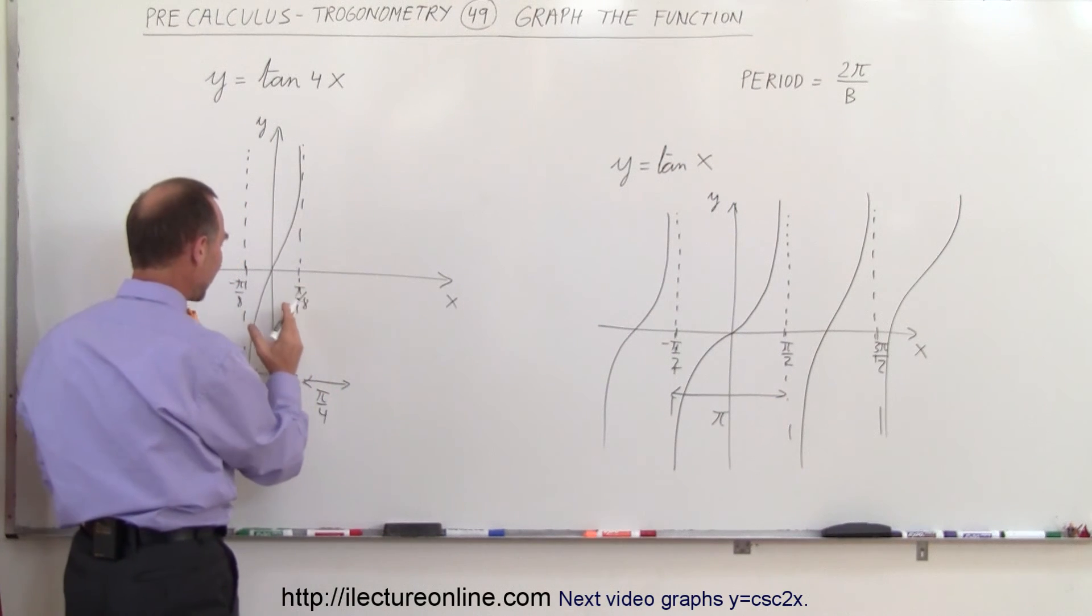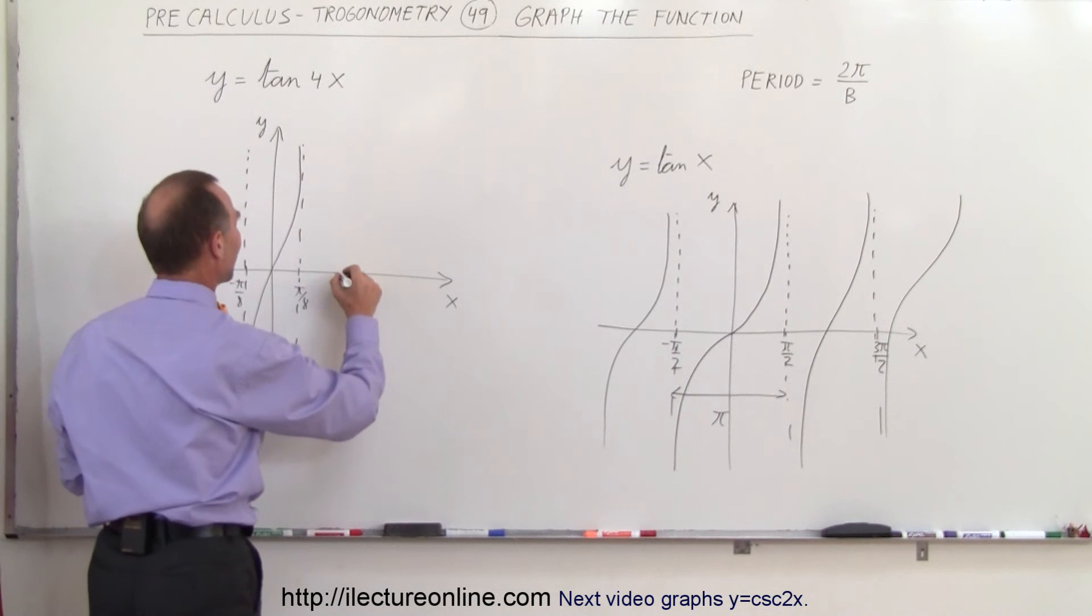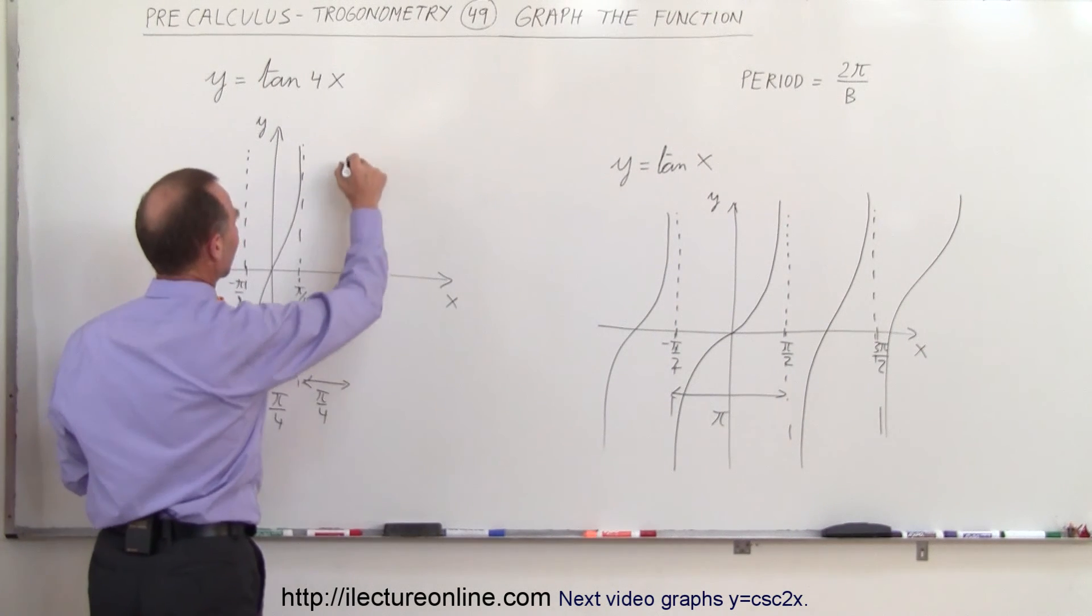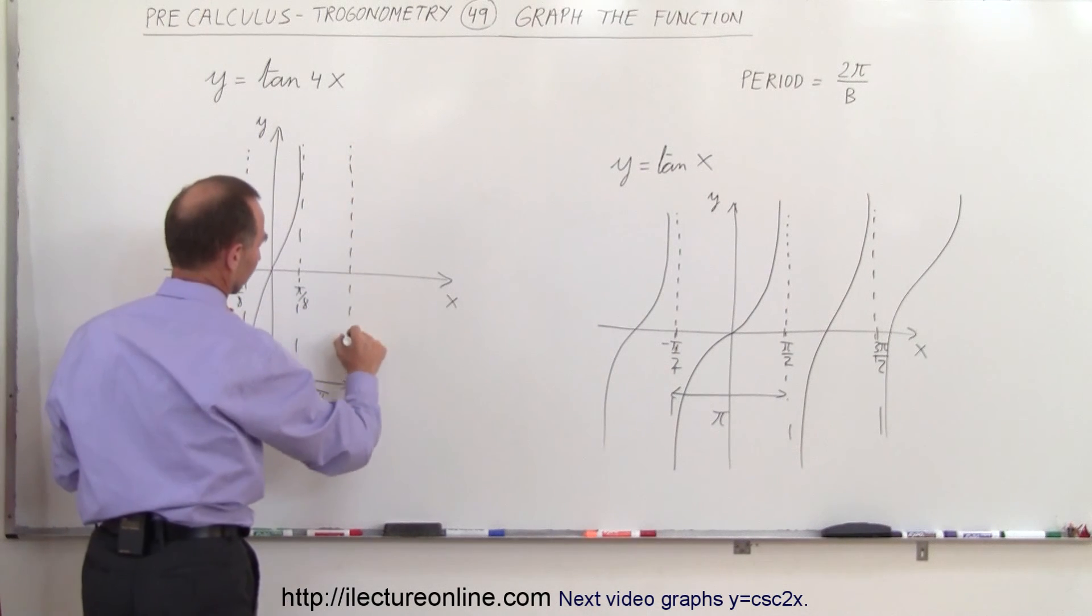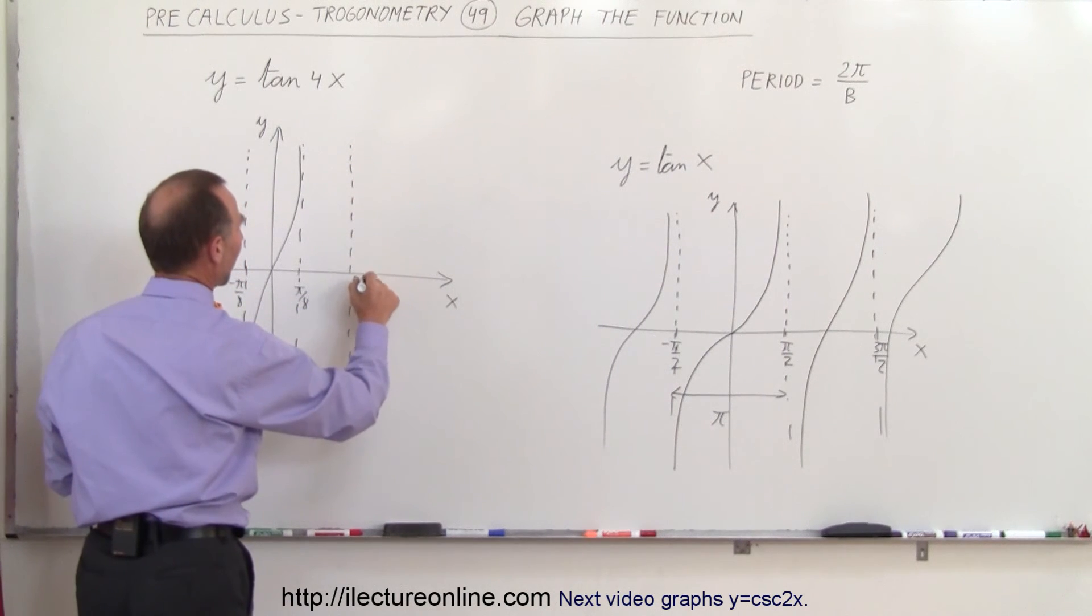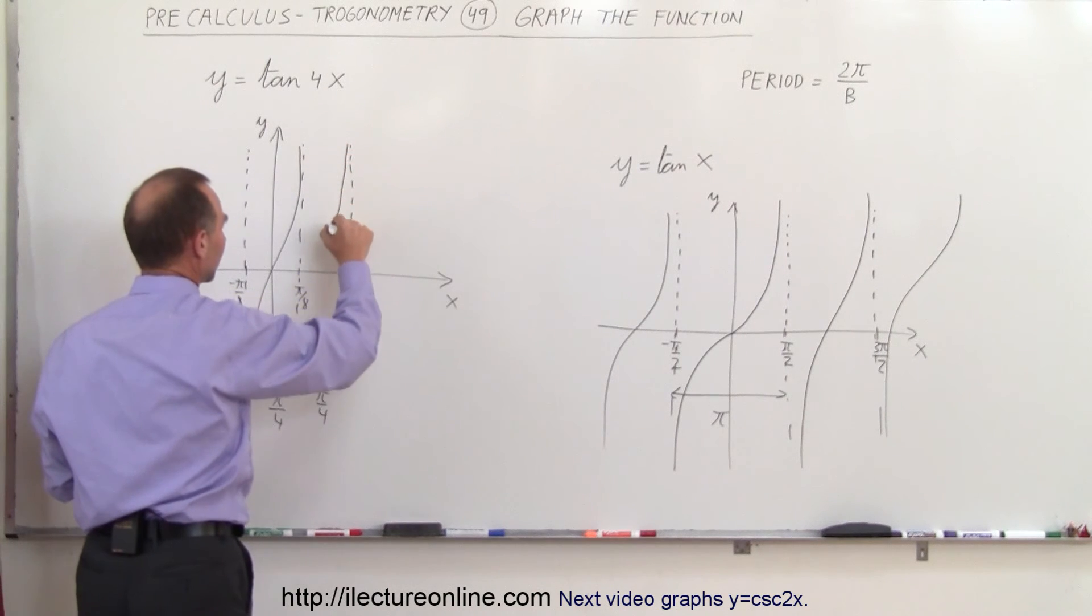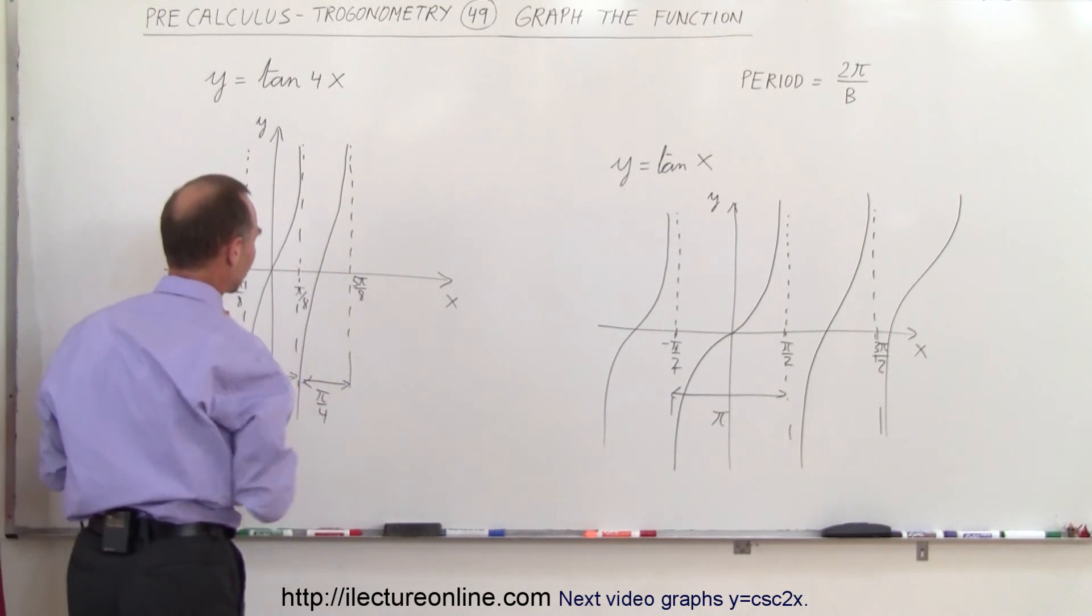So we go from pi over 8, add pi over 4 to that, that would be 5 pi over 8, so let's go over here, so I have another asymptote right there, and this will be 5 pi over 8, and then we have another function, another part of the function like that, and then we move over another pi over 4,